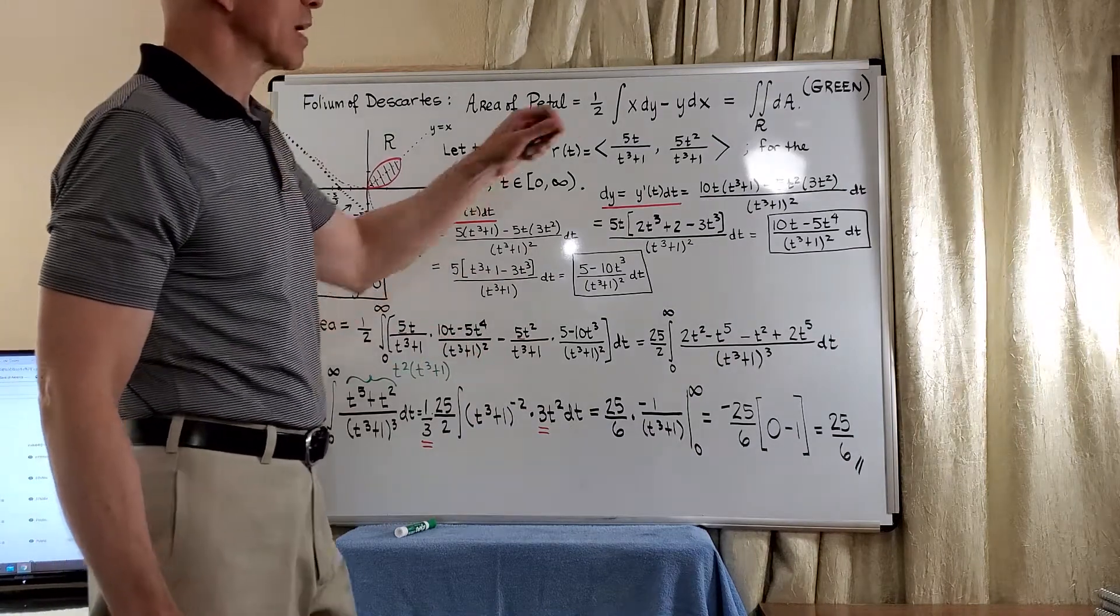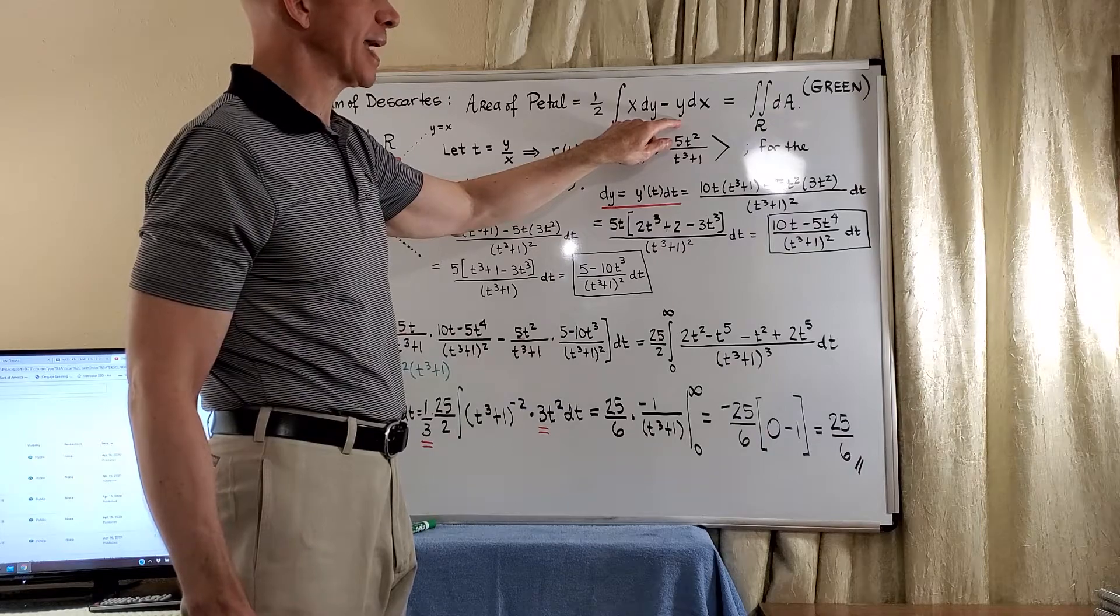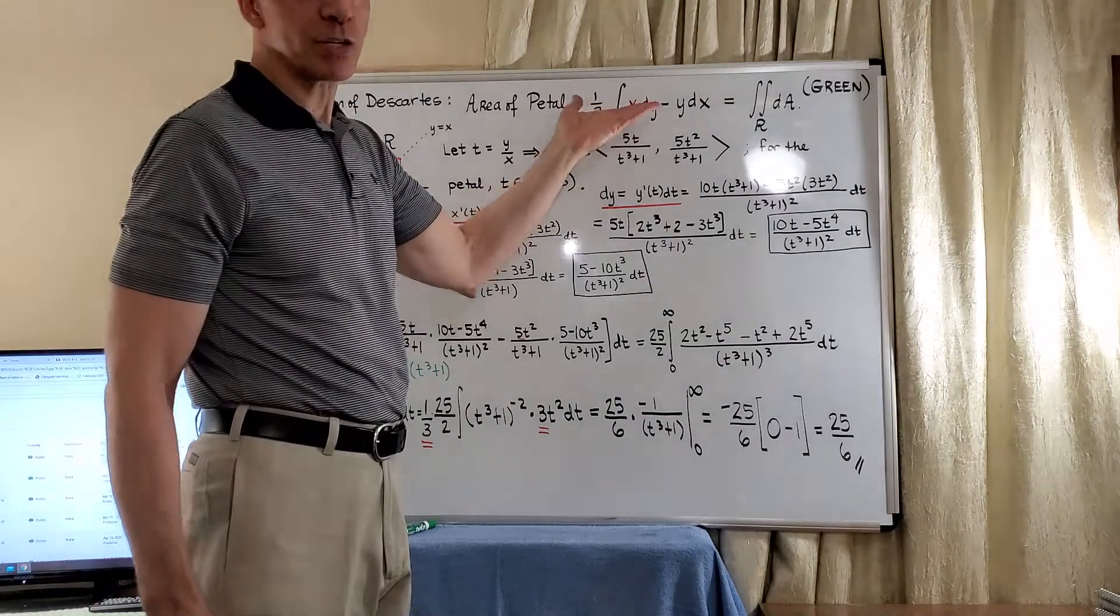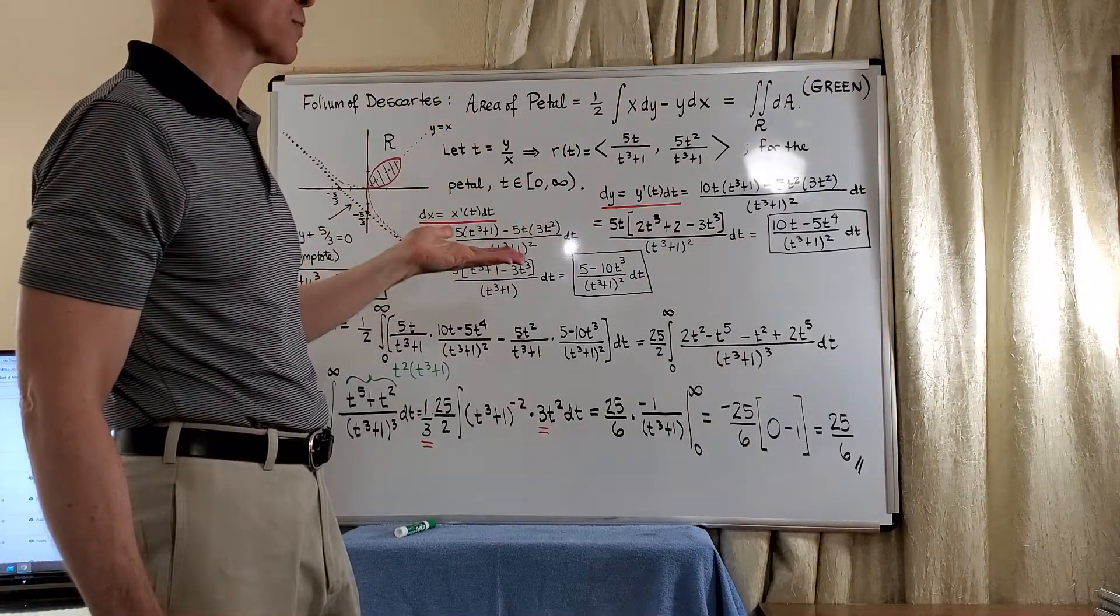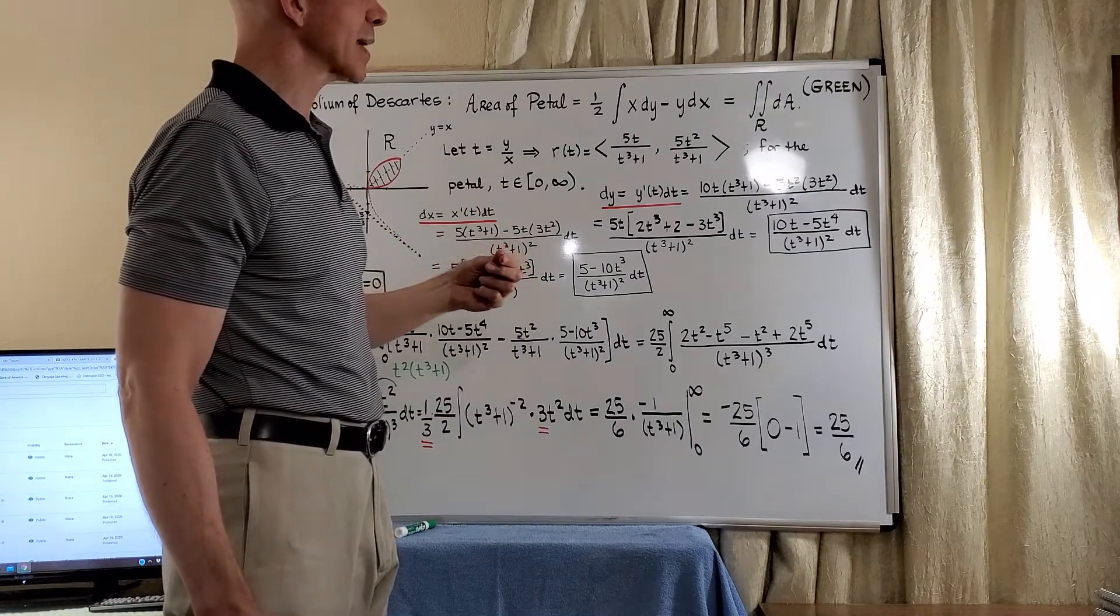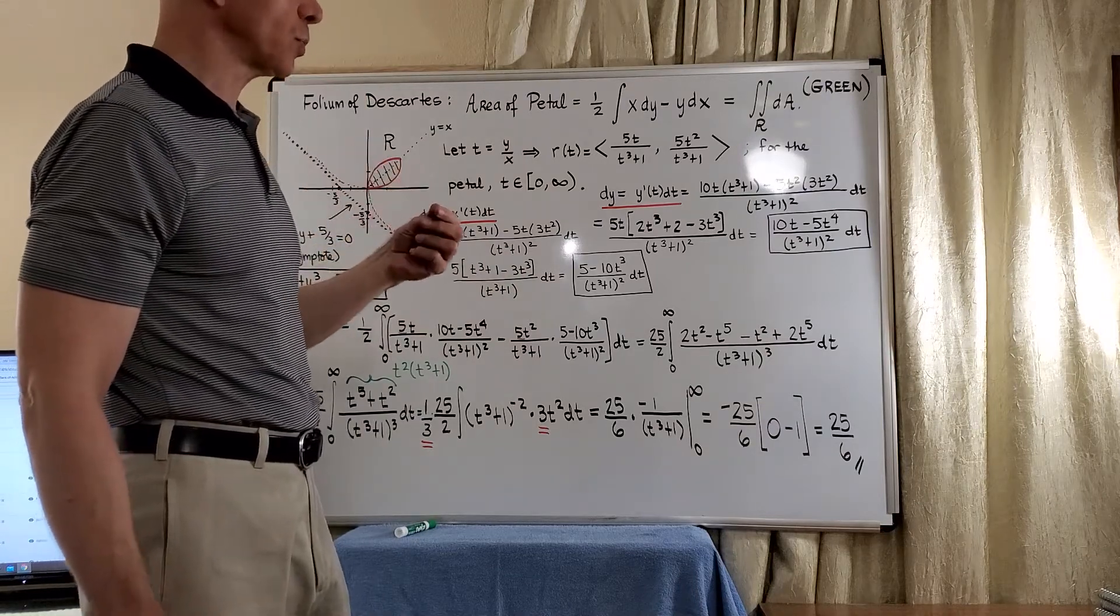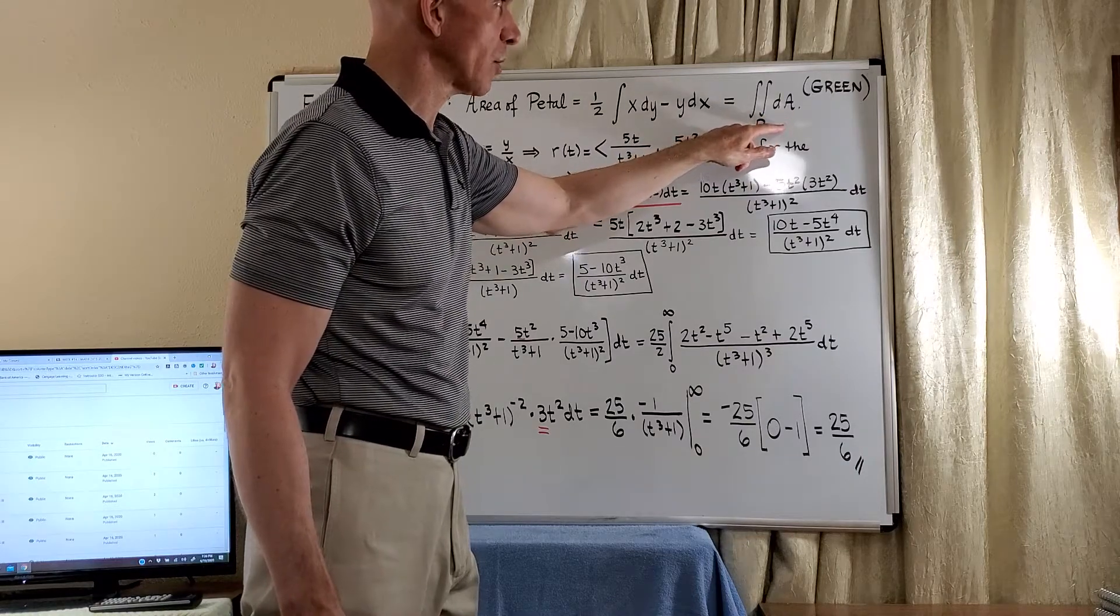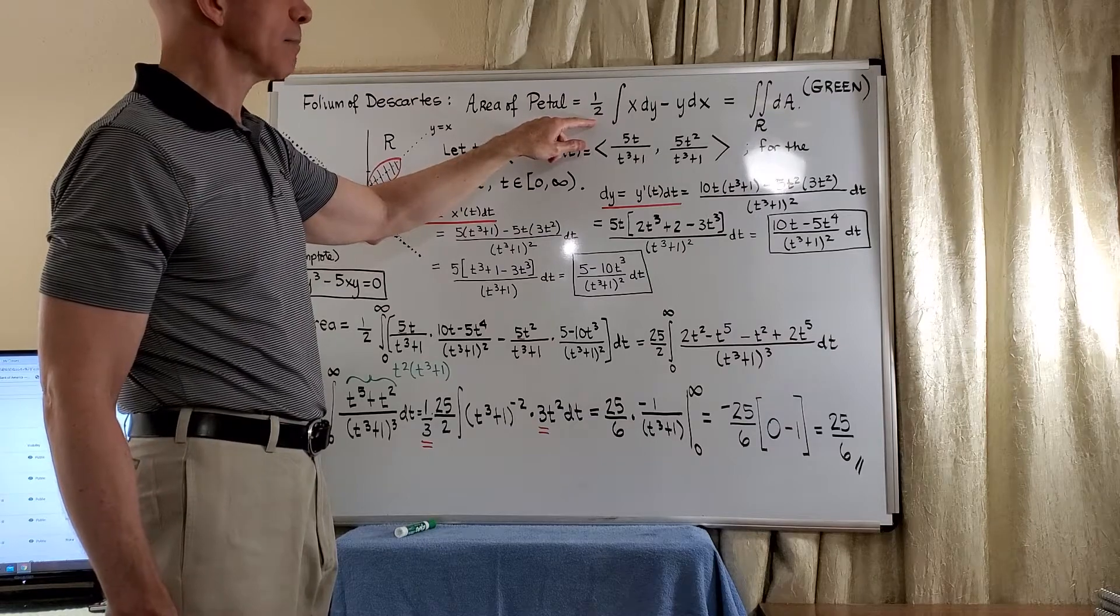The idea is that we can take the m for our vector field to be negative y, and we can take the n for our vector field to be x. These are not specific, they're arbitrary, but they turn out to be very useful. When you take the partial of n with respect to x and subtract the partial of m with respect to y, you get a 2. So you get 2 times the area of the petal, this double integral right here, and you pay for it by multiplication by 1 half.